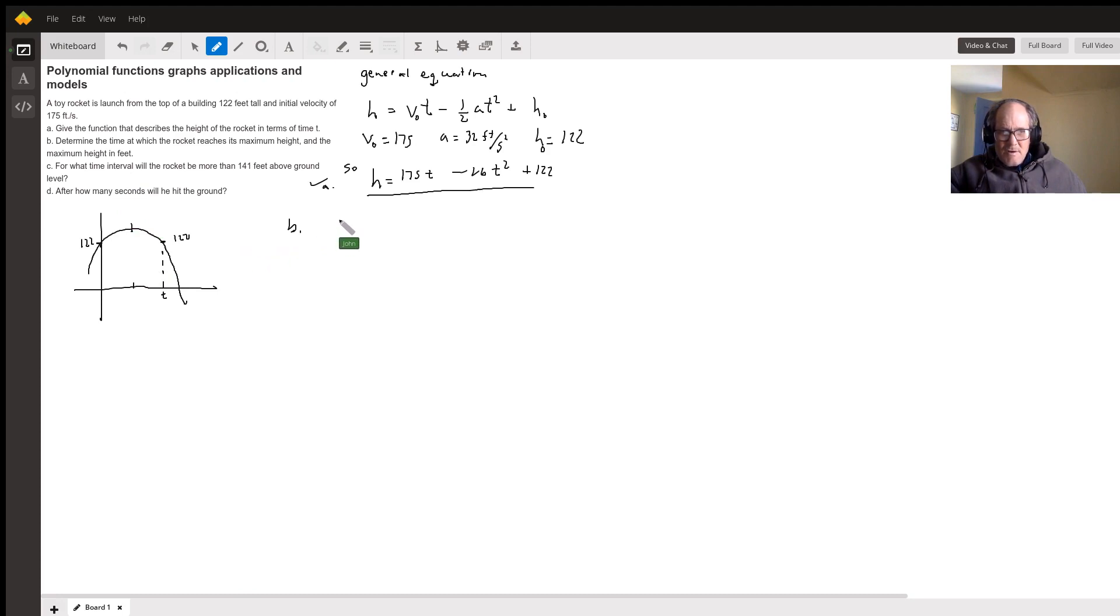So let's just start it out for you, and then you can finish it up, 175T minus 16T squared plus 122. Now, look what happens.